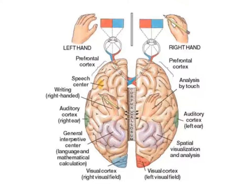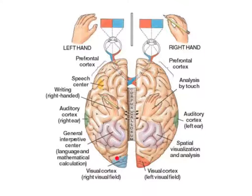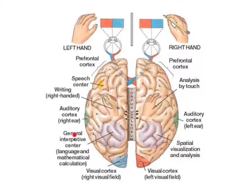The information from your left eye goes to your right hemisphere, and the information from your right eye goes to your left hemisphere. As you can see, there are different functions in both hemispheres.